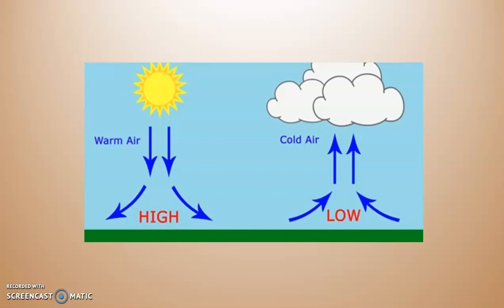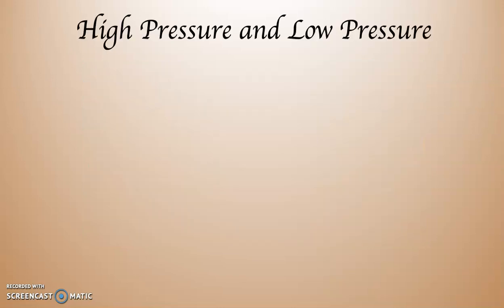Take a look at this diagram. We're going to return to it as I go through the monsoonal system in Asia. If you look at the left hand side, you can see there's a sun — it says warm air and it says high. The blue arrows indicate the movement of air. With high pressure, the air is coming down from above, going towards the surface of the planet, and as it does that it diverges outwards. On the other side, it says low — the air is coming together, rising, and you see clouds. This describes the movement of air within high and low pressure systems, and the thing you need to be most focused on is the movement of the air itself.